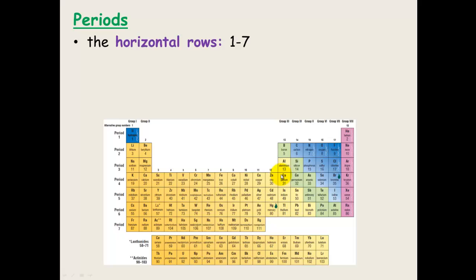The periods are the rows, the horizontal rows, which go across the periodic table. And these are numbered 1 through to 7. And they indicate the number of occupied electron shells. So, period 4 for instance, has 4 electron shells that are occupied by electrons.